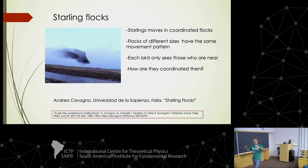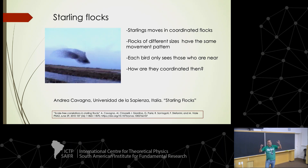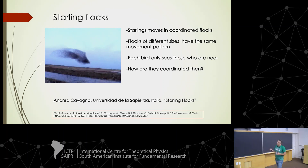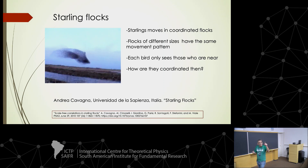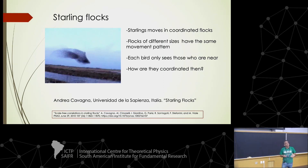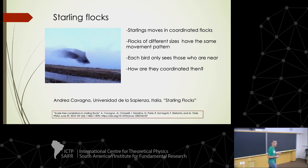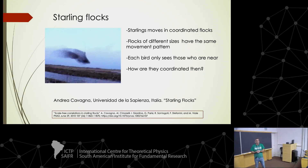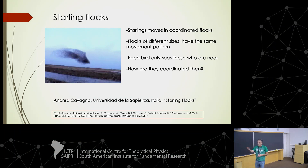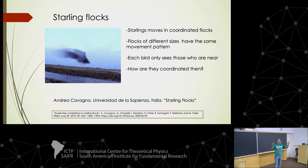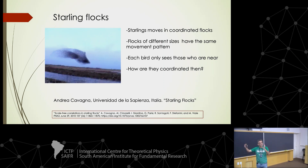Starling flocks of different sizes have the same pattern of movement, but each bird only sees the birds nearby. So how does coordination without a central authority emerge from single local interactions? This is what Mauro was telling us with neurons, and Gabo is going to speak about tomorrow. We can see it is a common frame for different problems from different disciplines.